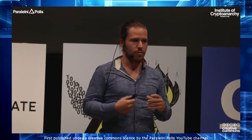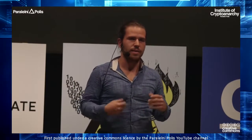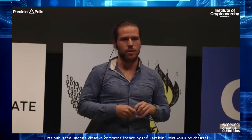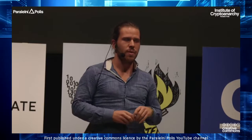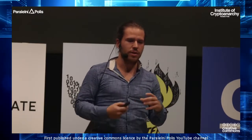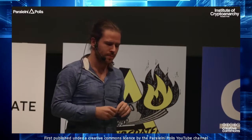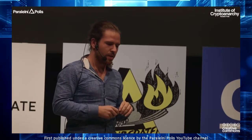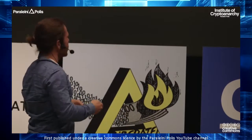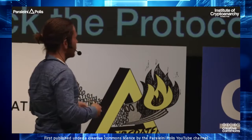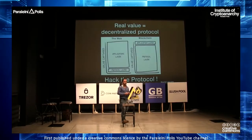Why is one square way bigger than the other? Because the value captured and generated can be compared like this: in the web, the guys who take the money home are the Googles and the Facebooks. The money generated in the blockchain world is at the protocol layer — at least, this is the vision, like blockchain being the web 3.0 that's going to disrupt everything.